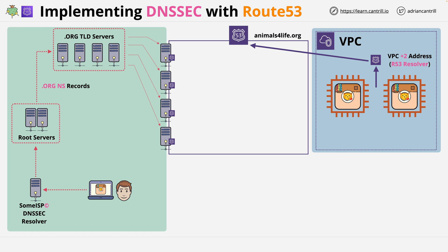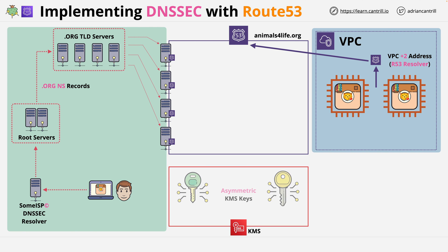Enabling DNSSEC on a Route 53 hosted zone is done from the Route 53 console UI or the CLI. Once initiated, the process starts with KMS. An asymmetric key pair is created within KMS — a public part and a private part. You can think of these conceptually as the key signing keys or KSKs, though the KSK is technically created from these keys. These keys are used to create the public and private key signing keys which Route 53 uses, and they need to be in the US East 1 region — that's really important to keep in mind.